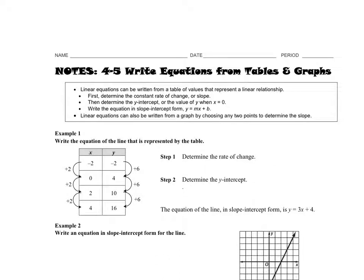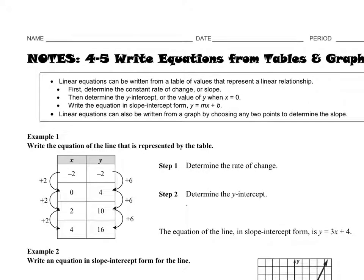We're talking about notes 4-5, writing equations from tables and graphs. We looked at this top part and talked about that linear equations can be written from a table of values that represent a linear relationship. We already talked about these when we did our task cards. Just going to help you understand what's going on and re-hit that for you.